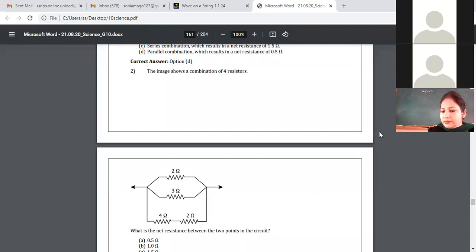2 and 4 ohm are in series, so their sum is 6 ohm. Then with the other resistor, 2 into 3 over 2 plus 3. That becomes 6 by 5. Then 6 by 5 plus 6. What is the answer? 36 by 5.